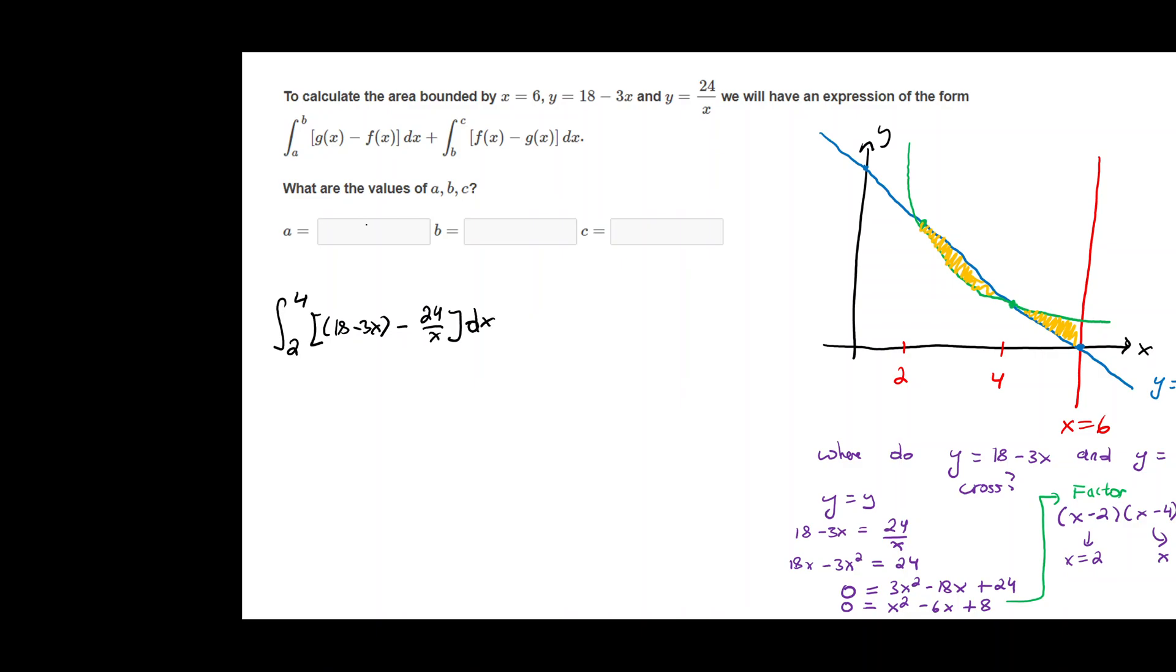So we're going from 2 to 4, that's your a and your b, plus integral from b, 4 to 6. The top curve there is going to be 24 over x, the hyperbola, minus the bottom curve which is the blue line, 18 minus 3x.